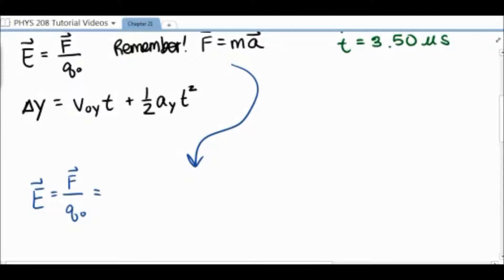So we're going to rewrite our equation for the electric field using Newton's second law. So we have E equals MA over Q naught. Now we have to solve for A using our kinematics equation. So since there is only acceleration in one coordinate axis in the y, we're going to use delta y equals V naught y t plus one half a y t squared, where we'll try to solve for a y. There is no initial velocity, so we can cancel out the first term on the right side of the equation.